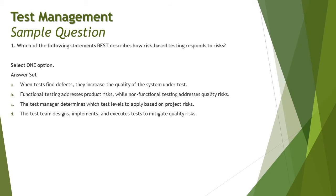Option A says when tests find defects they increase the quality of the system under test — that's true, but some non-functional risks may be mitigated early while others may be mitigated later in the life cycle, so finding defects alone doesn't fully address risk-based testing. Option D states the test team designs, implements, and executes tests to mitigate quality risk — that's the approach you follow to mitigate identified risks. So the right answer is D.